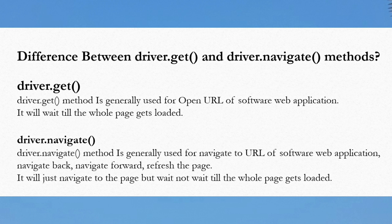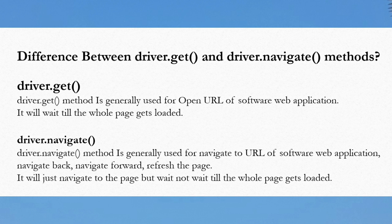The next question is: what is the difference between driver.get() and driver.navigate()? driver.get() is generally used to open the URL of a web application and it will wait until the whole page gets loaded. Whereas driver.navigate() is generally used to navigate to a URL, navigate back, navigate forward, and refresh the page, but it will not wait until the whole page gets loaded — it finds the element without waiting for full page loading. That is the main difference between get() and navigate().